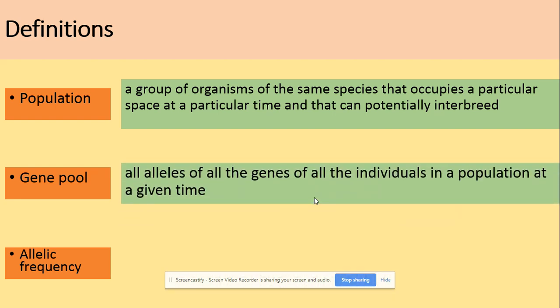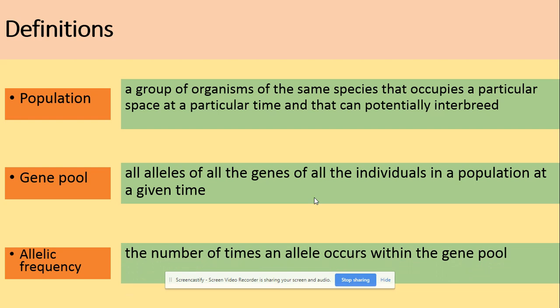Gene pool: all of the alleles of all the genes of all the individuals in a population at a given time. And allele frequency is the number of times an allele will occur within the gene pool.